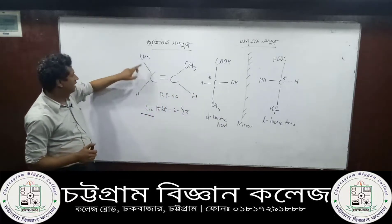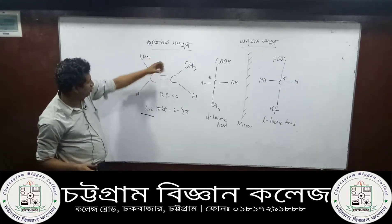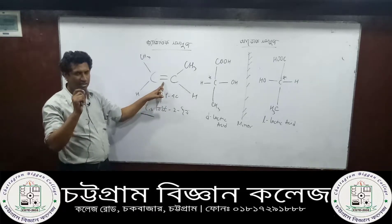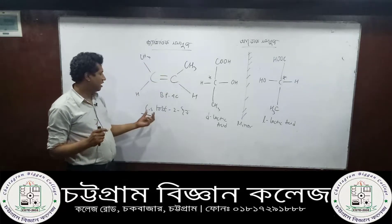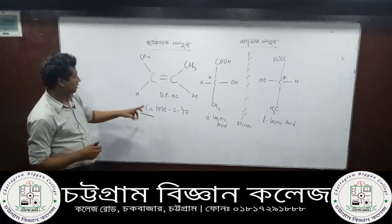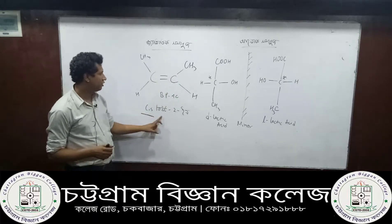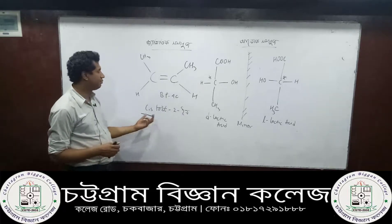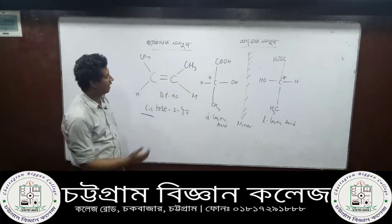Cs is cis. Methane, ethane, propane, butane. Cs3 is cis; carbon-carbon double bond is cis-cis. The two number position is two, so this is cis-but-2-ene and this is trans-but-2-ene.